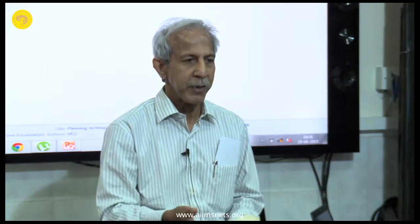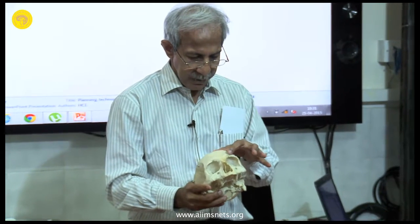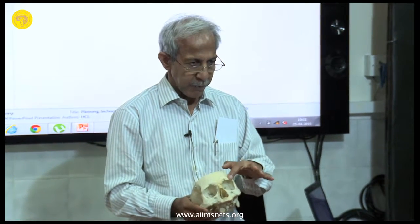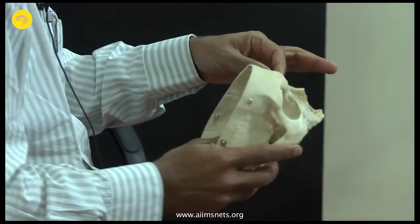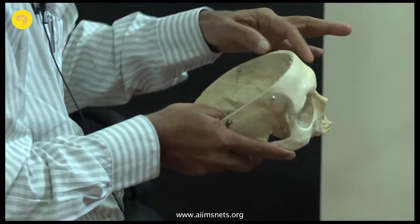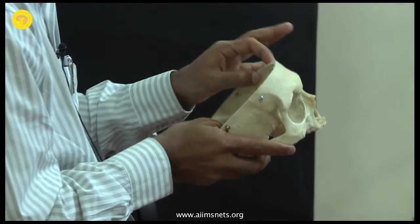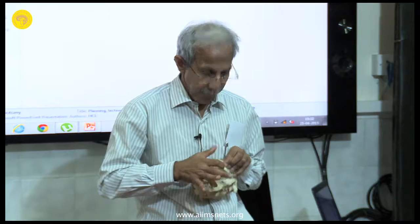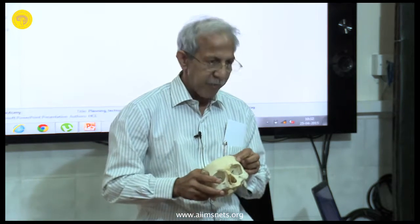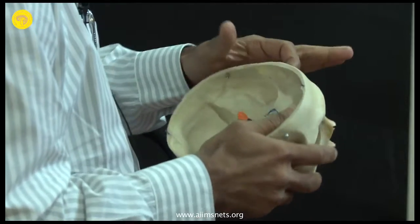What bony landmarks do you use? There are three important bony landmarks. One is always visible: the superior temporal line. Second is the lateral margin of the superorbital rim. Third is where these two meet with the frontal process of the zygomatic bone. These three meet at a point.